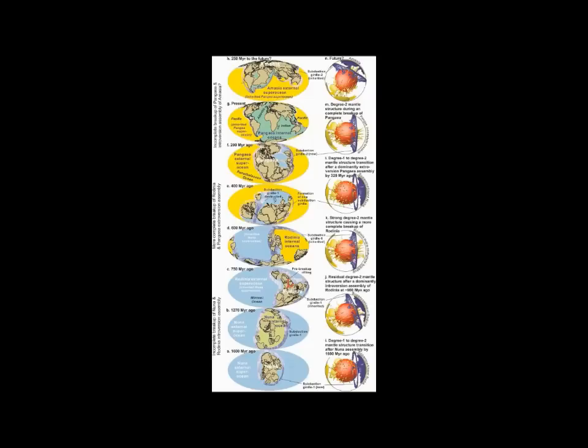The supercontinent that incorporated almost all of Earth's land masses. Rodinia had formed via introversion, where the internal oceans formed during the breakup of previous supercontinent Nuna were consumed.